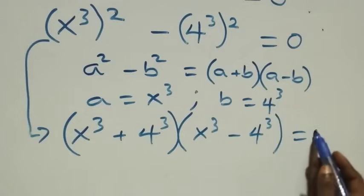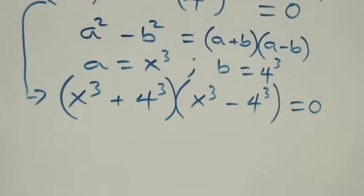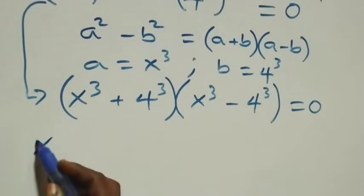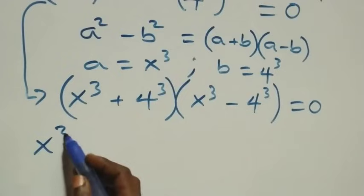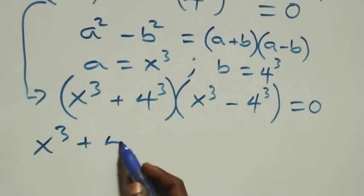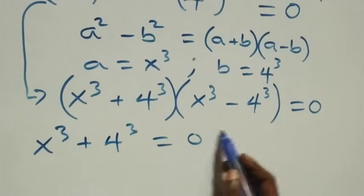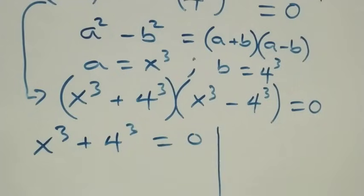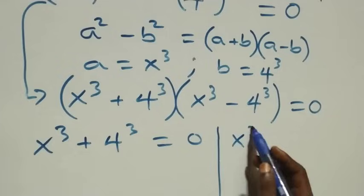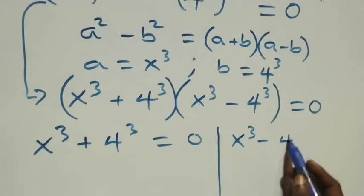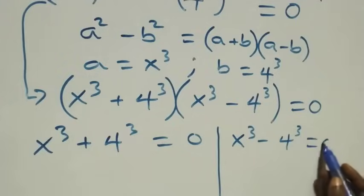We now have two possible cases: x raised to power 3 plus 4 raised to power 3 equals 0, or x raised to power 3 minus 4 raised to power 3 equals 0.